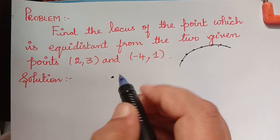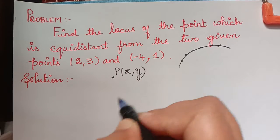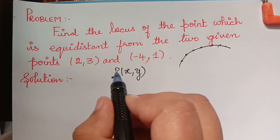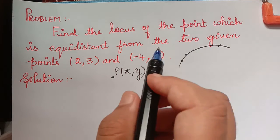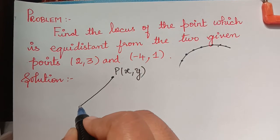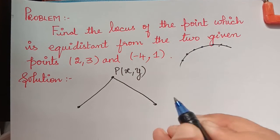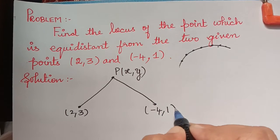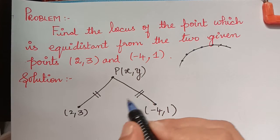This point has unknown coordinates, so we take it as (x, y) and call it point P. We have to find the locus of point P, given that it is equidistant from the two given points. One point is (2, 3) and the other is (-4, 1), and those two distances are equal.